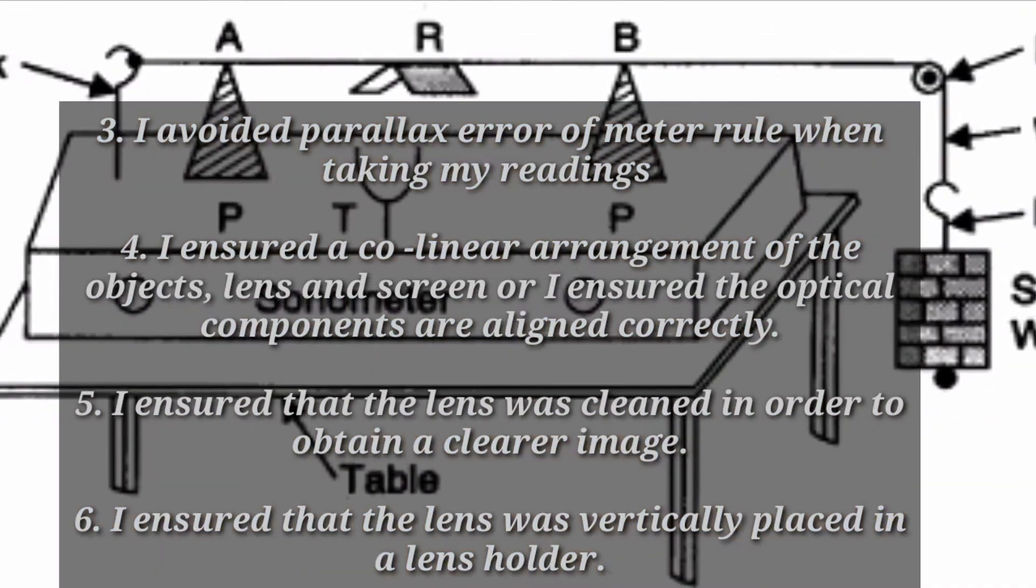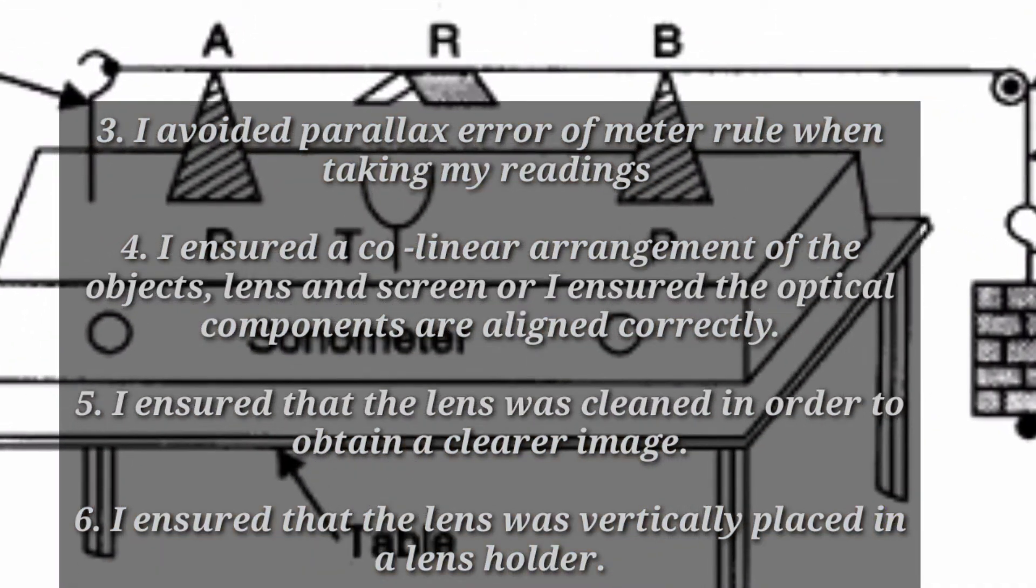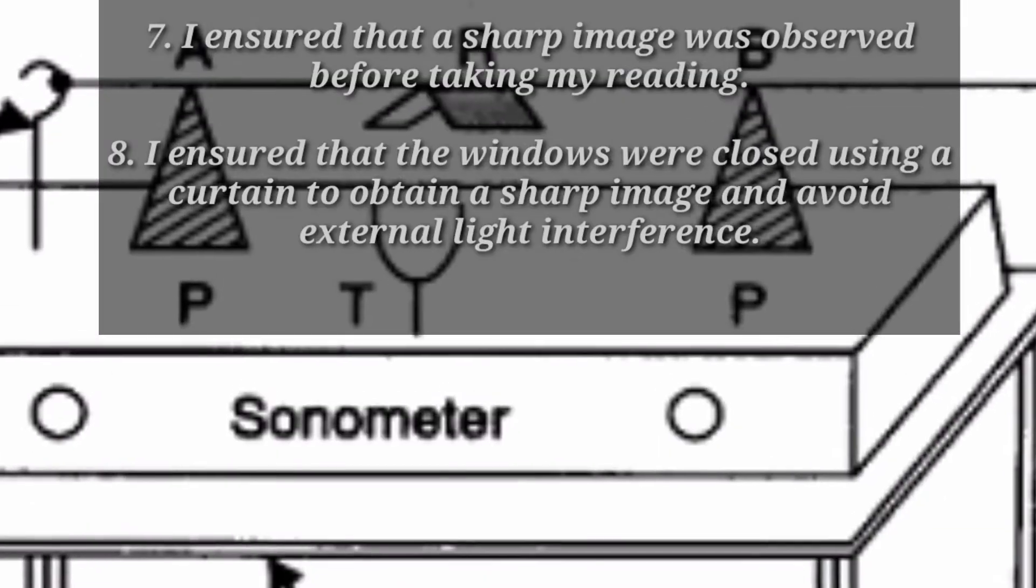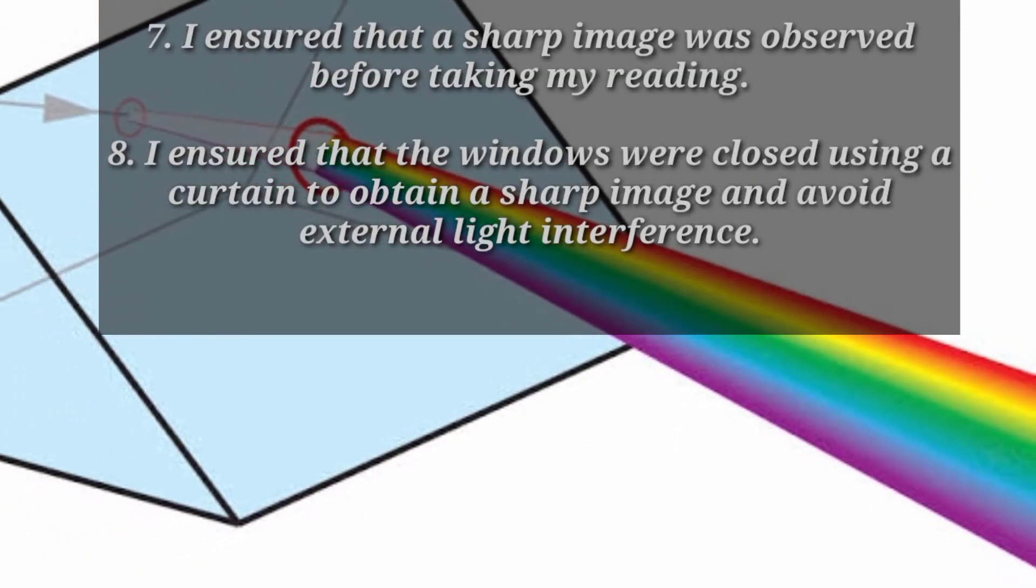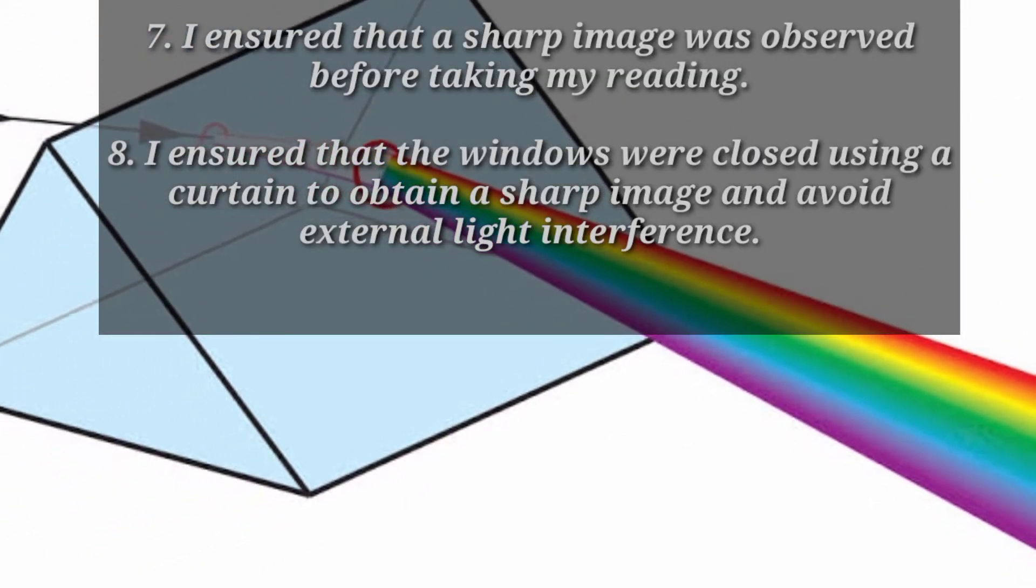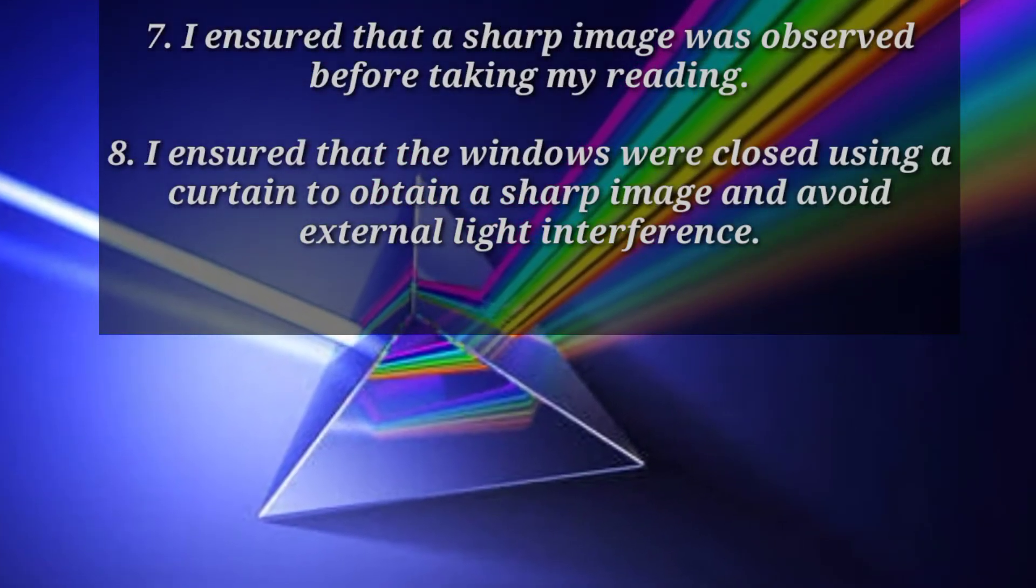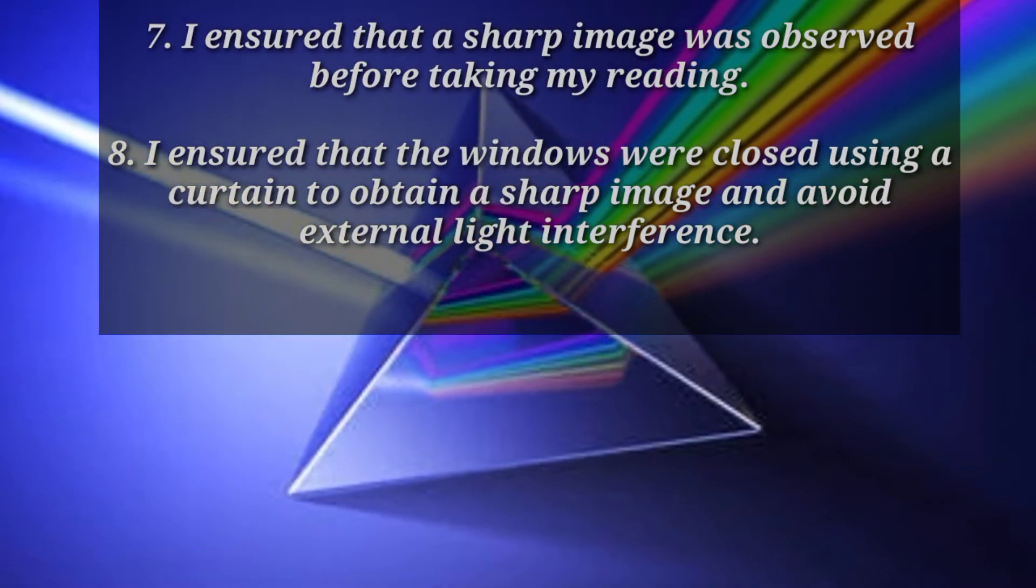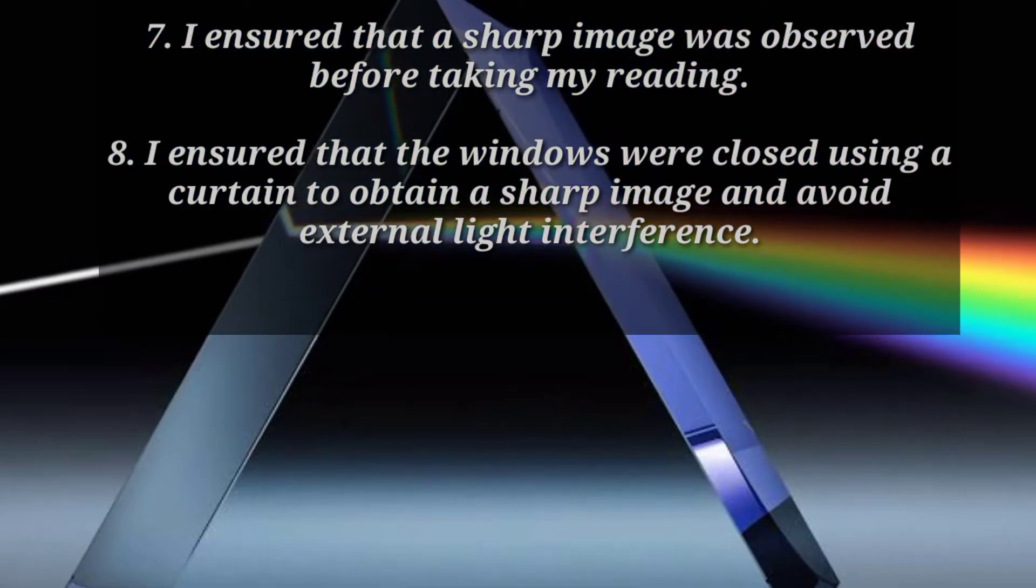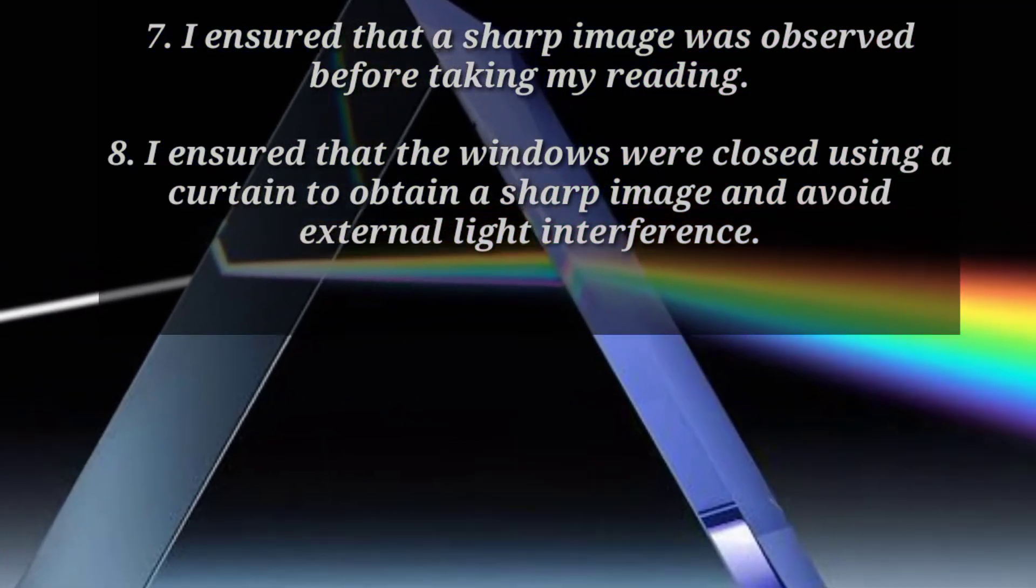Precaution 6: I ensured that the lens was vertically placed in a lens holder. Precaution 7: I ensured that the windows were closed using a curtain to obtain a sharp image and avoid external light interference.